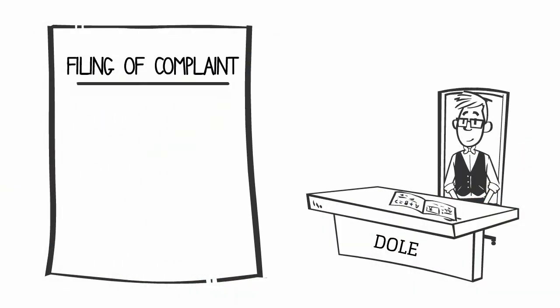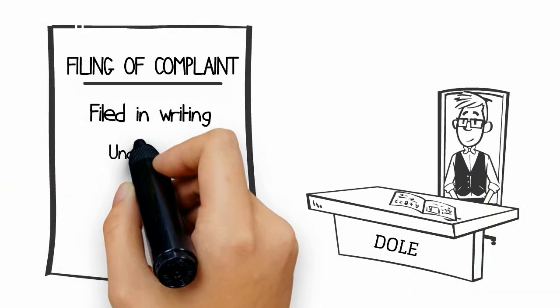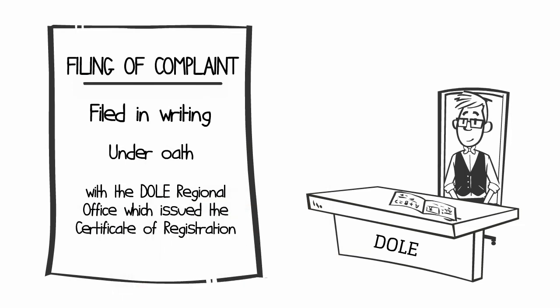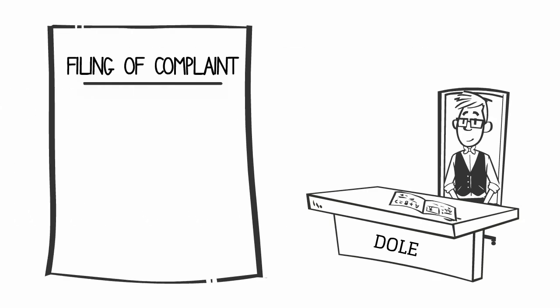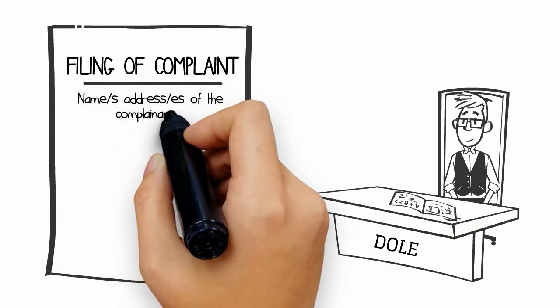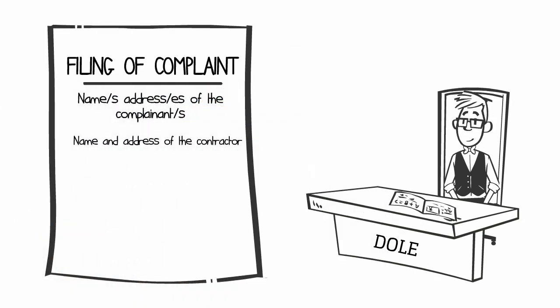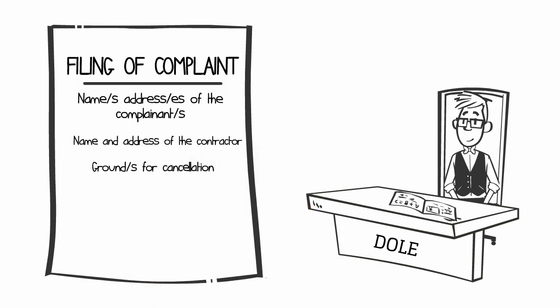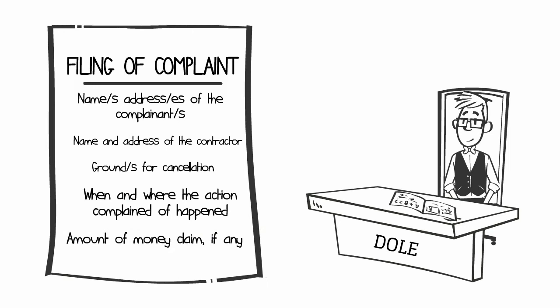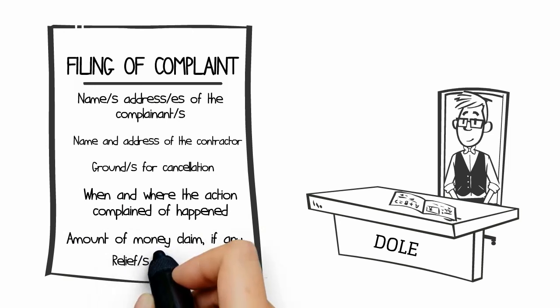Any complaint based on valid grounds should be filed in writing and should be under oath with the DOLE Regional Office which issued the certificate of registration. The complaint shall state the name and address of the complainant, the name and address of the contractor, the grounds for cancellation, when and where the action complained of happened, and the amount of money claim if any.